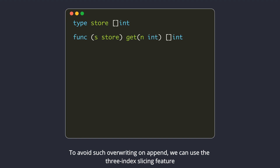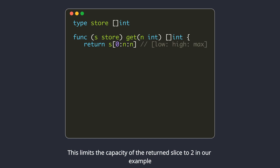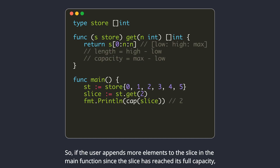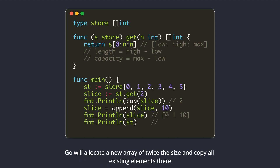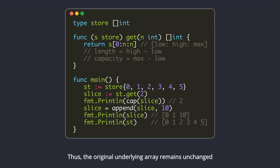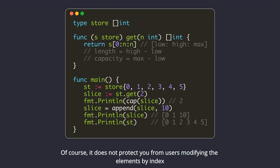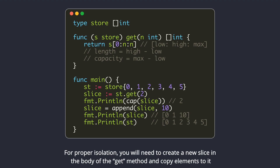To avoid such overwriting on append, we can use the three-index slicing feature. This limits the capacity of the returned slice to two in our example. So if the user appends more elements to the slice, since the slice has reached its full capacity, Go will allocate a new array of twice the size and copy all existing elements there — the original underlying array remains unchanged. Of course, it does not protect you from users modifying the elements by index. For proper isolation, you will need to create a new slice in the body of the get method and copy elements to it.